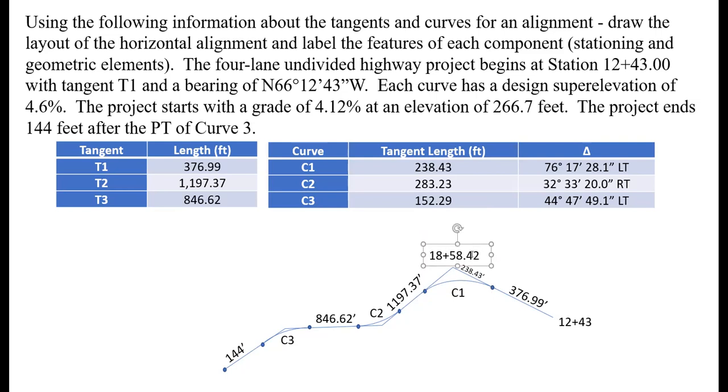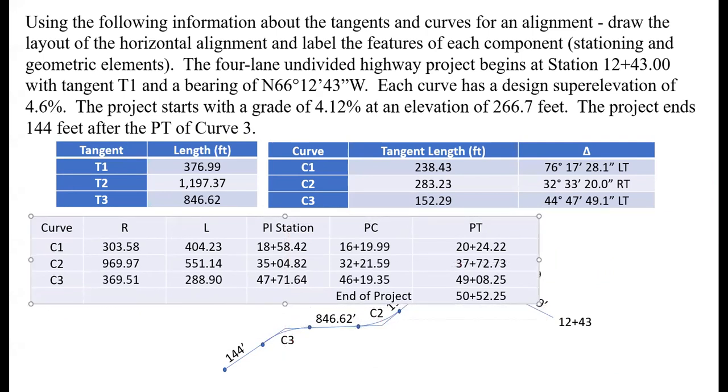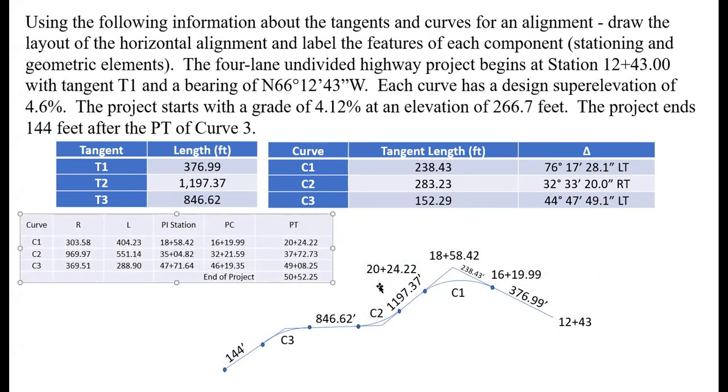Then we can subtract back off the tangent length for the curve to get our PC of curve one, and that's going to give us 16+19.99. Now we're going to add the length of curve one, which was 404.23 feet, and that will give us a station for the PT of curve one of 20+24.22.